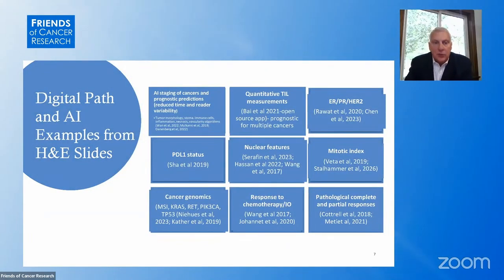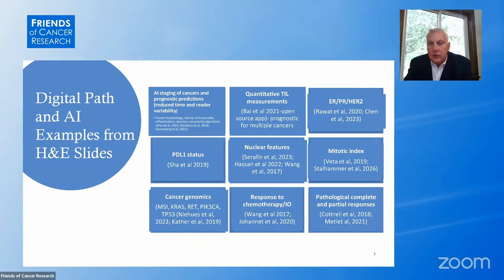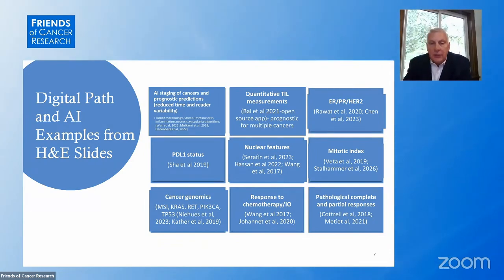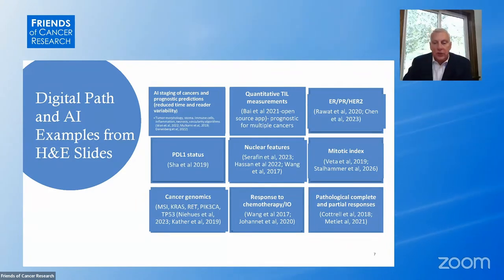Examples of digital pathology from H&E include staging and prognostic predictions with reduced time and reader variability. Quantitative measurements of tumor infiltrating lymphocytes — a good prognostic factor for a number of cancers — have an open source application. There's also ER/PR predictions, PD-L1 prediction, nuclear features, and cancer genomics, including predicting MSI and KRAS from H&E, which is an area of great interest. Additionally, development of response markers for IO and chemotherapy is important in this field.